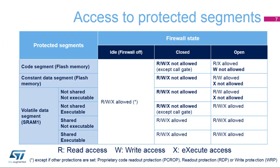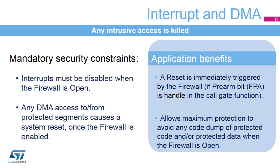The type of access to the protected segments depends on the firewall state. When it is closed, any access to the protected area generates a system reset. When the firewall is open, some access is possible. In the code segment — flash memory — read operations and instruction fetches are allowed. In the non-volatile data segment — flash memory — read and write operations are allowed. In the volatile data segment — SRAM1 — read, write, and execute operations are allowed if the SRAM1 segment is declared as shared or executable. When the firewall is disabled or closed, there is no protection.